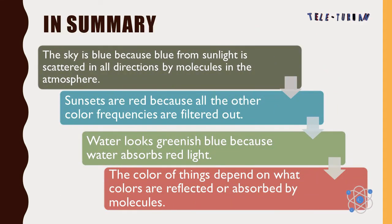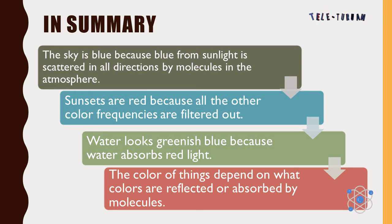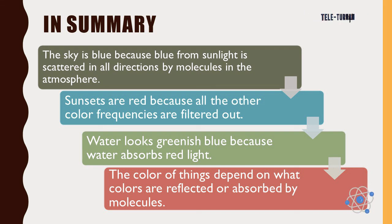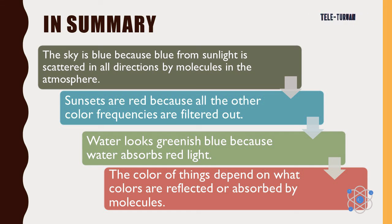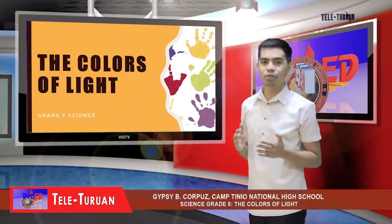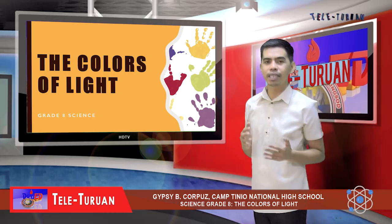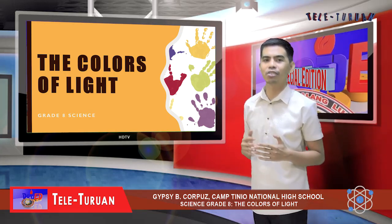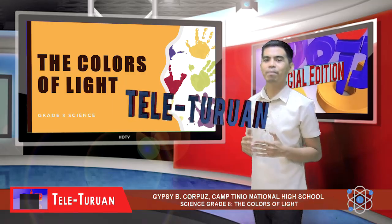In summary: the sky is blue because blue from sunlight is scattered in all directions by molecules in the atmosphere. Sunsets are red because all the other color frequencies are filtered out. Water looks greenish blue because water absorbs red light. The color of things depends on what colors are reflected or absorbed by molecules. Thank you for your active participation. I hope that you have learned a lot. This has been Sir Zipzib Corpus of Campinion National High School. See you again next time. Goodbye.